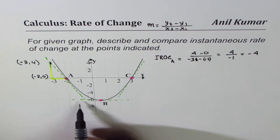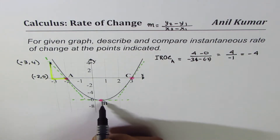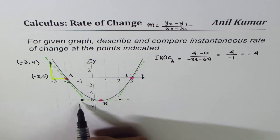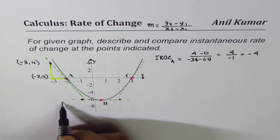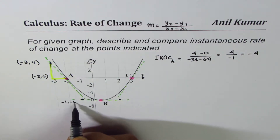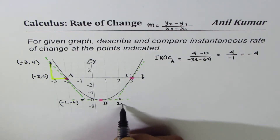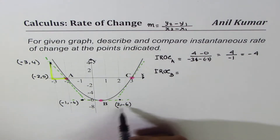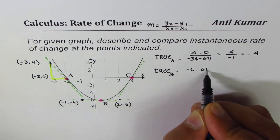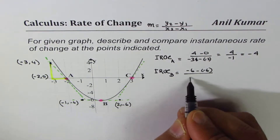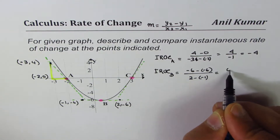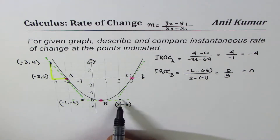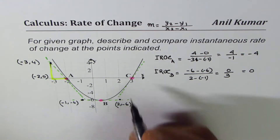Now for point B, we consider two points on the tangent line. The points are (-1, -6) and (2, -6). The instantaneous rate of change at B is (-6 minus -6) divided by (2 minus -1), which gives 0 over 3, which is 0. So the tangent is a horizontal line and the slope at B is zero.